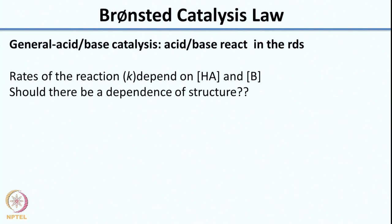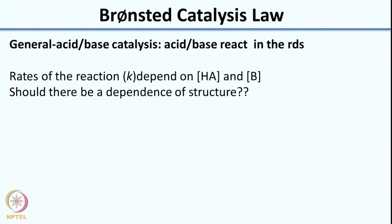Now we will go to what is called the Brønsted catalysis law. When you have general acid-base catalysis, the acid or base reacts in the rate determining step, and the rate of the reaction K depends on concentration of HA or B. The question is: should there be a dependence on structure? Do you think there would be a dependence of the K value on structure — say if you have a stronger acid or a stronger base, would that have an impact on the K value?